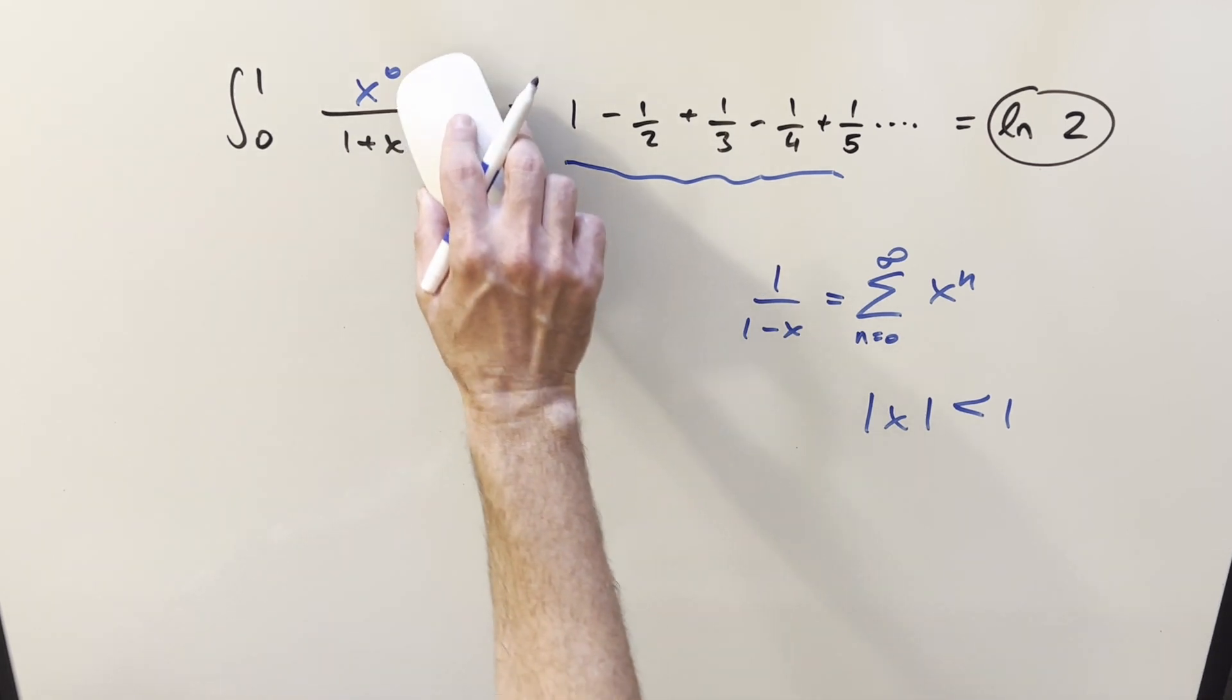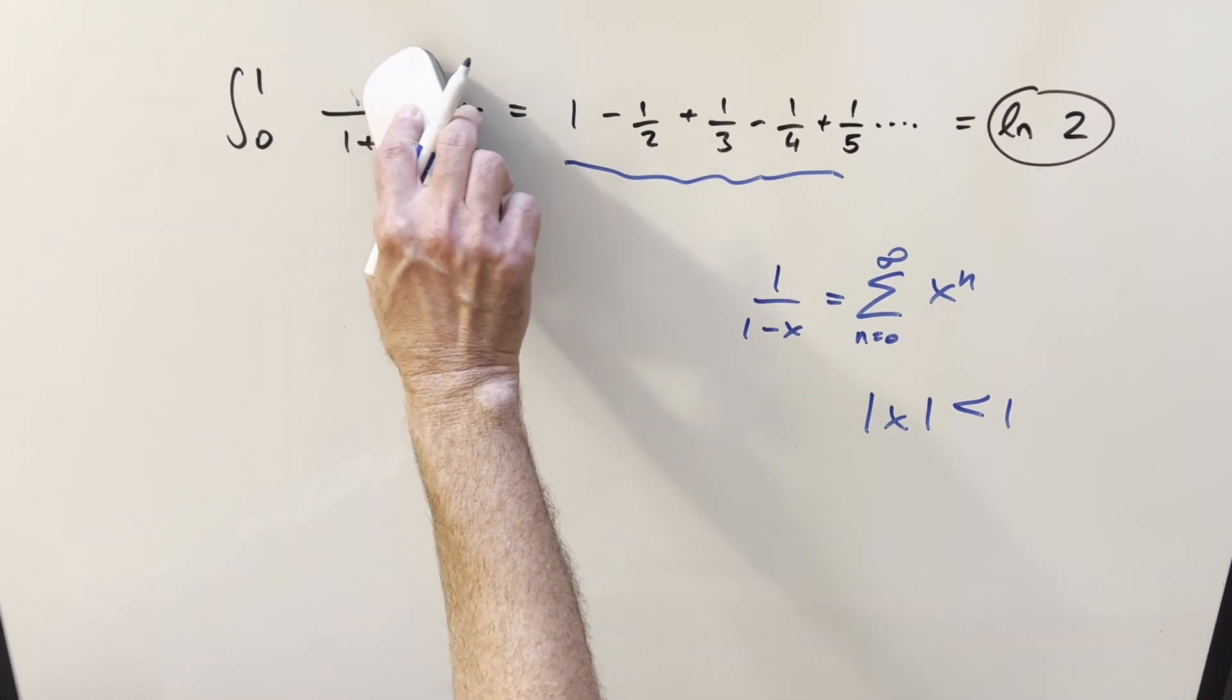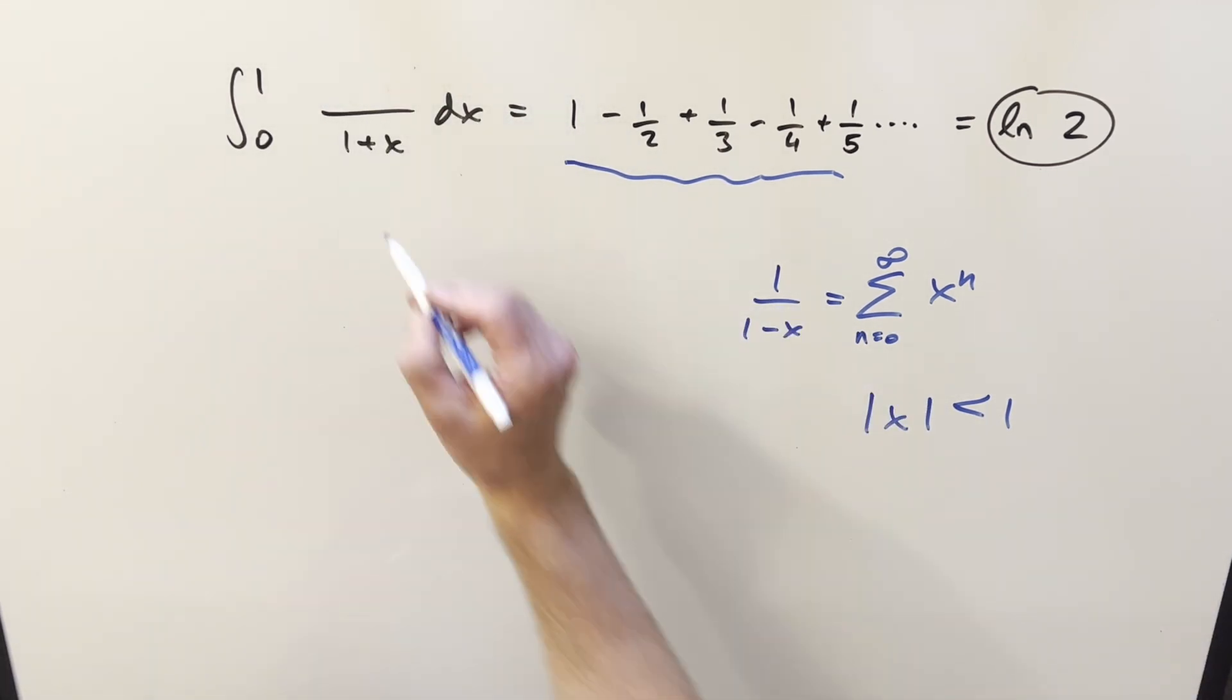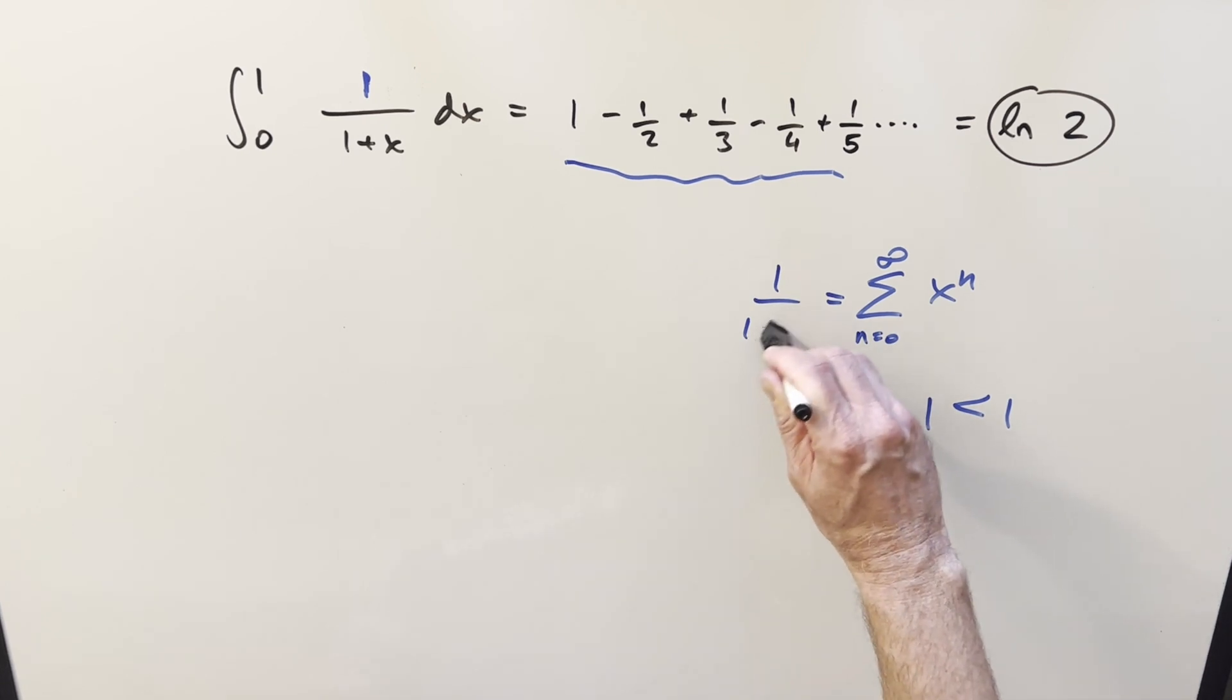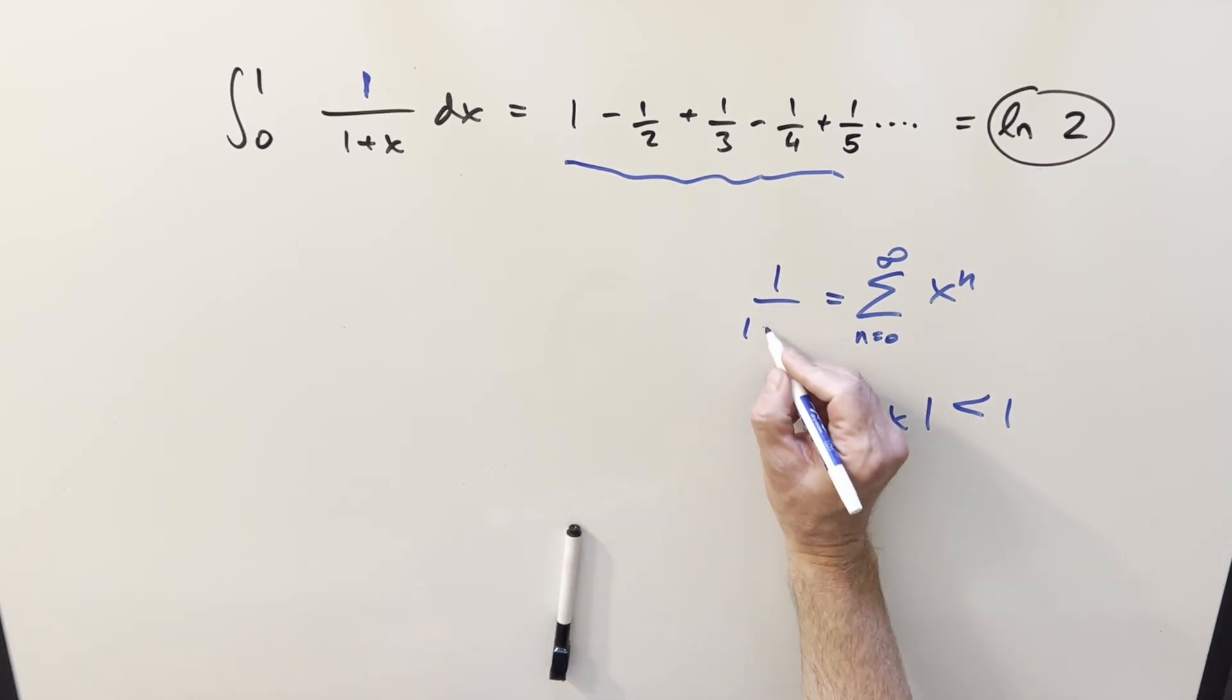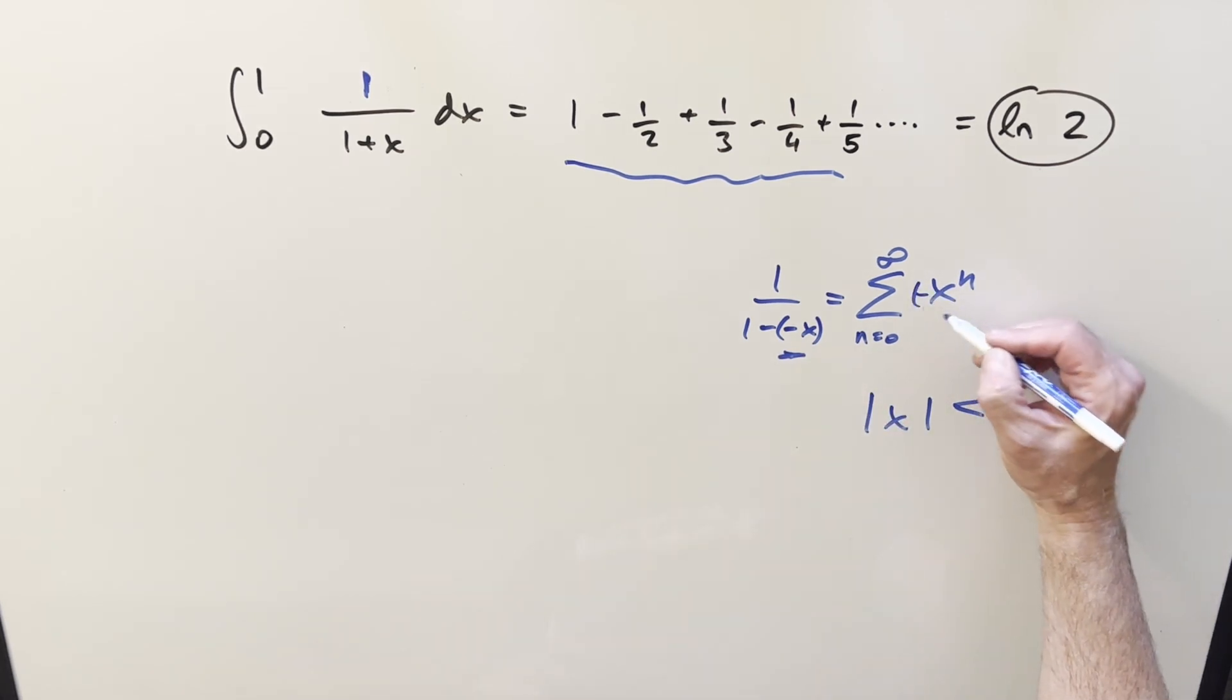But I want to change this slightly for our problem because we don't have 1 over 1 minus x. We actually have 1 over 1 plus x. So let's change this to a plus, but I'm going to write it a little differently. How I want to do this is let's write this as minus x. So we're like inputting this into our geometric series.